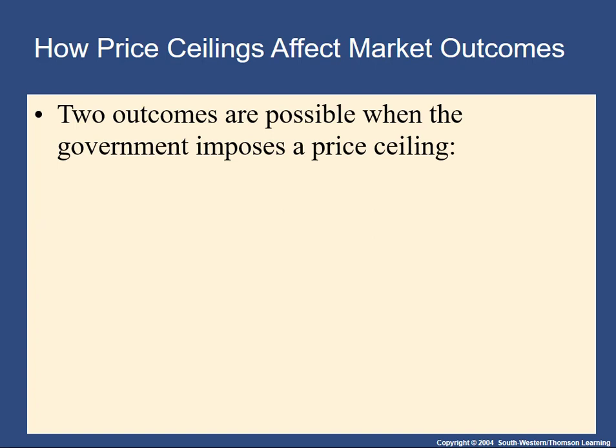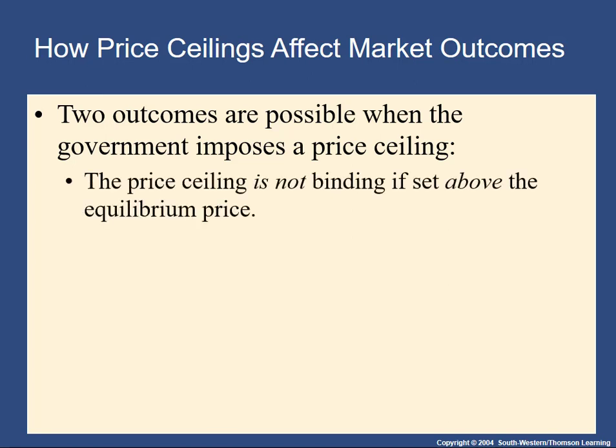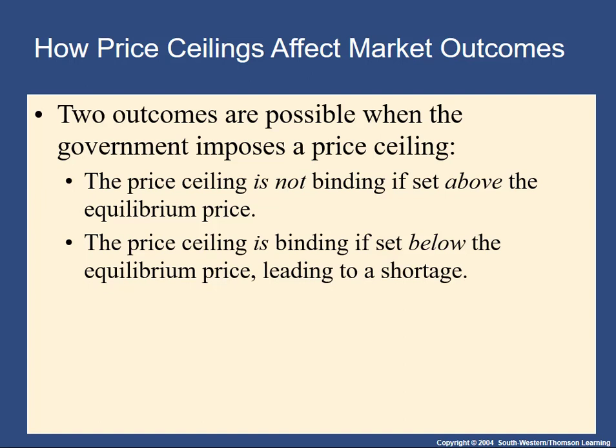How do price ceilings and price floors affect market outcomes? There are two possible outcomes. A price ceiling can be set so high — far above the equilibrium price — that nobody has to change their behavior, because the equilibrium price already satisfies the requirement. We say that price ceiling is non-binding. But if the price ceiling is set below the equilibrium price, it's going to lead to a shortage, and it's binding in the sense that buyers and sellers have to change their behavior.